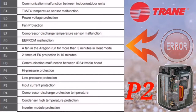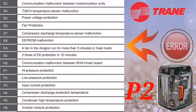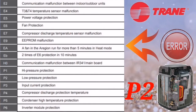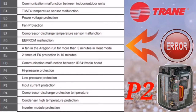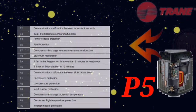The next error code is P2, which means low pressure protection, also called LP switch protection. This occurs when there is a lack of refrigerant in the system. Charge the refrigerant according to the back pressure specification. If the LP switch is broken and not sensing properly, replace the LP switch. If the outdoor PCB is not reading the pressure correctly, replace the outdoor PCB.